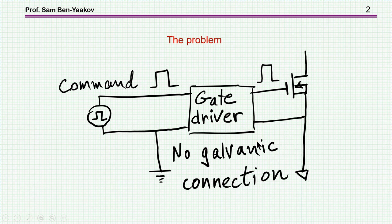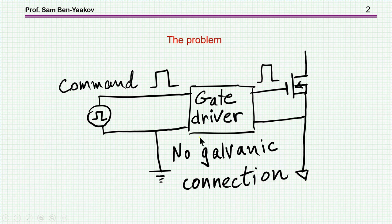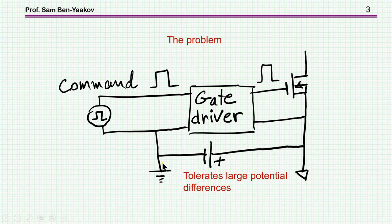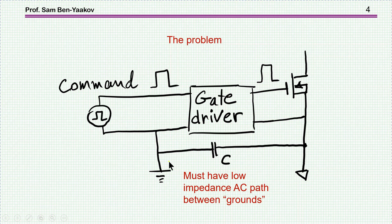The circuit we are talking about is a driver for a high-side transistor, in which case we don't want a galvanic connection between the command side and the actual power side. The intention is to have a gate driver that can handle this potential difference. This difference could be a voltage difference riding on a high voltage, or it could be a capacitive connection between the two grounds. There must be an AC impedance between this side and this side.